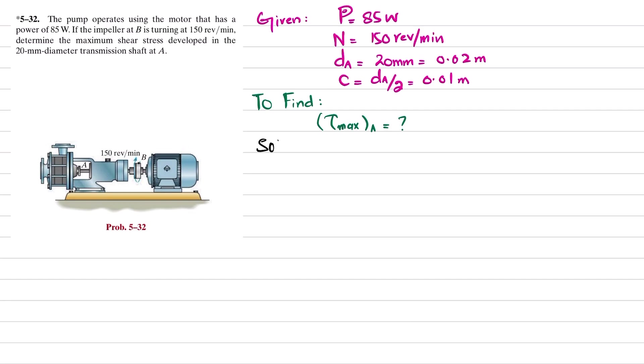Let's solve it. We know that power is equal to torque times angular velocity, so angular velocity is equal to 150 revolutions per minute. We will convert this into radians per second.